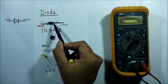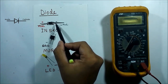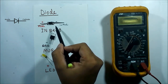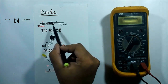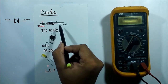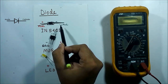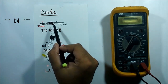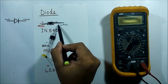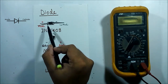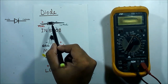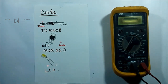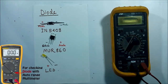The band is present here, so we can say this is the negative terminal. Current can flow in this direction, but current cannot flow in the opposite direction. So this should be the cathode and this should be the anode. Looking at the band, we can identify the terminals.